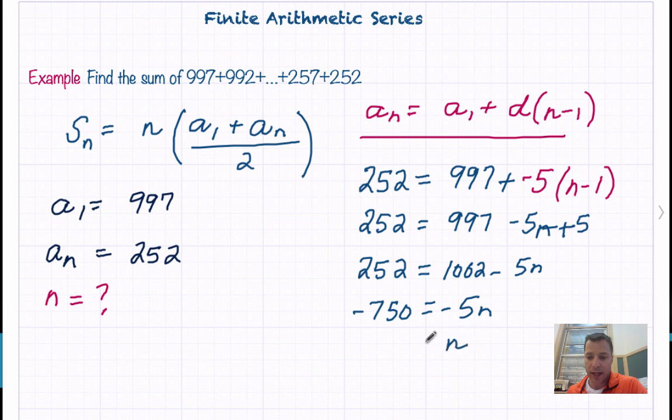So that means n equals 150. There are 150 terms, and this number better be positive because it's the number of terms we're looking at.